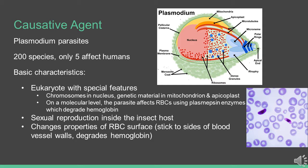On a molecular level, Plasmodium uses the plasmepsin enzyme to degrade red blood cells' hemoglobin. While inside the mosquito host, female and male Plasmodium sexually reproduce. While inside the human host, the parasite changes properties of the red blood cells and eventually kills them.